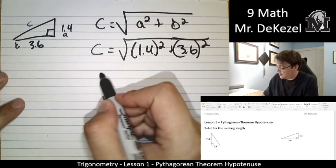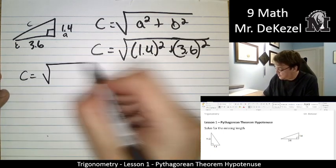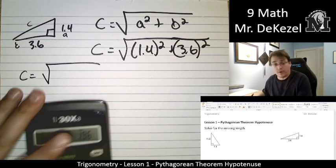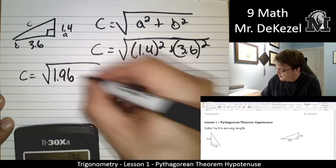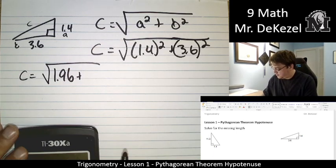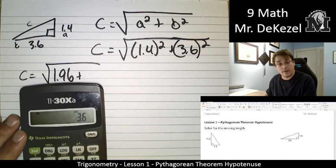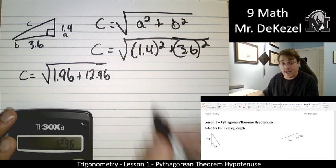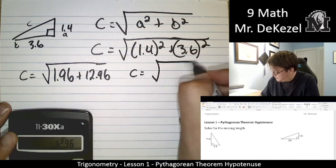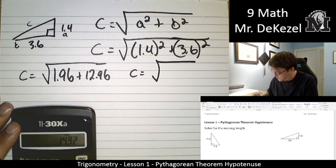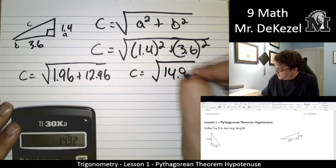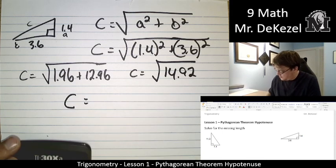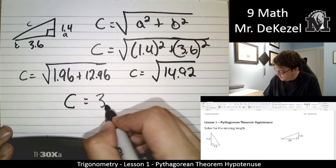Let's do this in our calculator. C is equal to the root. What's 1.4 squared? 1.96. And then 3.6 squared. 12.96. We're going to go ahead and add those together. And then take the square root of those. So C is equal to the square root. That's 3.86.